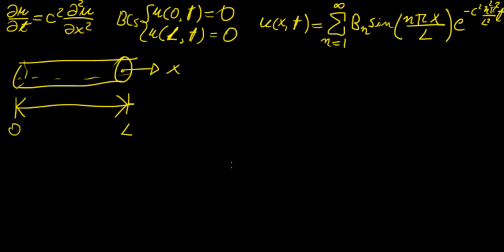Previously we discussed how to solve the one-dimensional heat equation given boundary conditions that are of Dirichlet type, where essentially the heat distribution or temperature at the ends is just going to be zero. And we came up with the following solution using separation of variables.